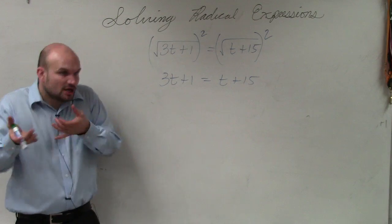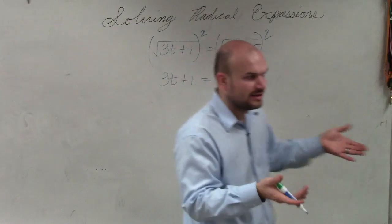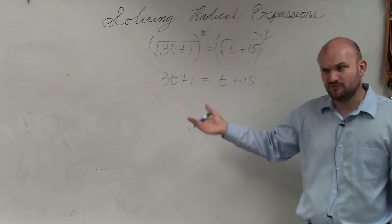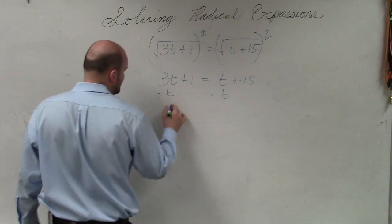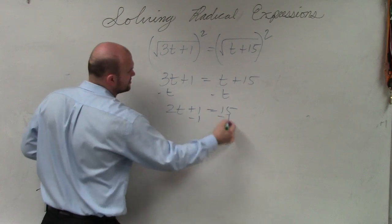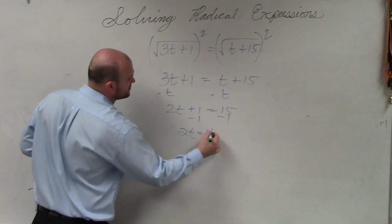Now, by undoing the square root by squaring them, we have an equation without any square roots, which hopefully is something you guys are much more familiar with and prefer to solve. So I subtract 1, subtract 1. 2t equals 14.